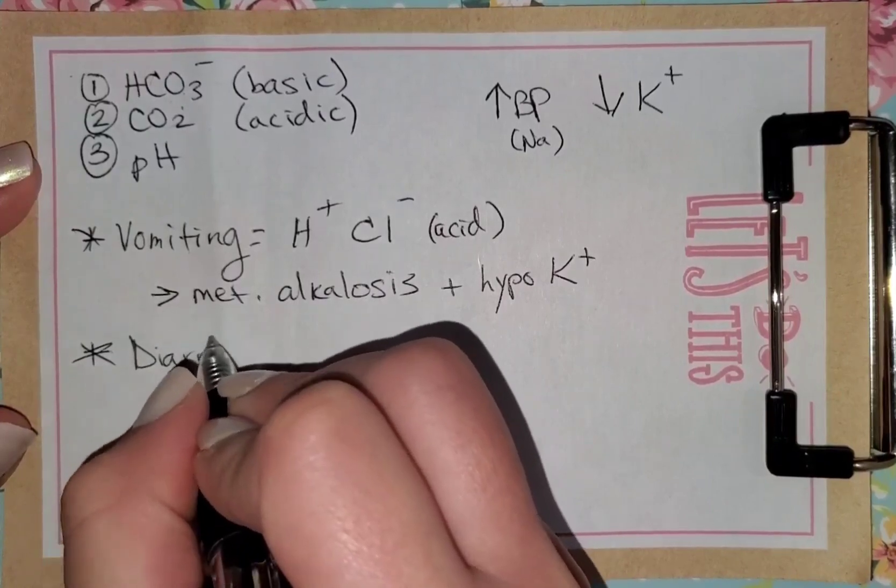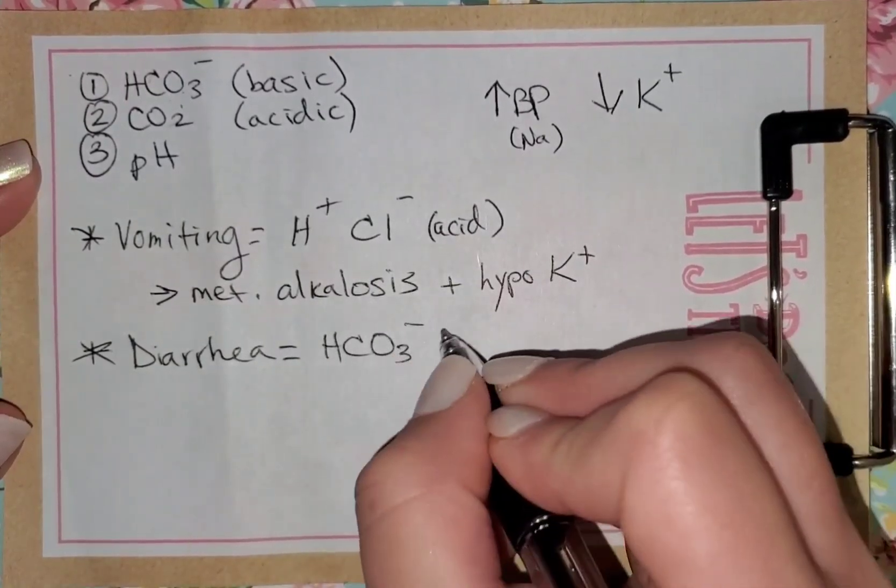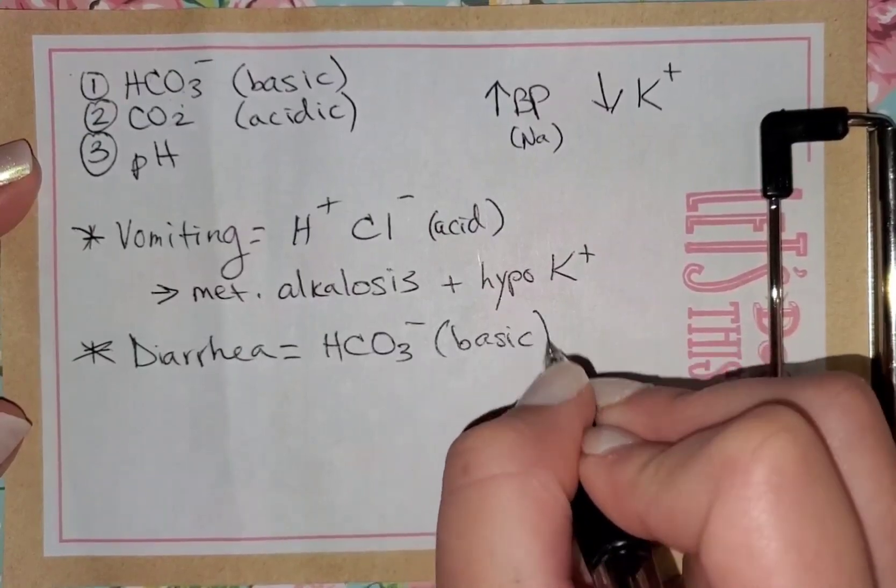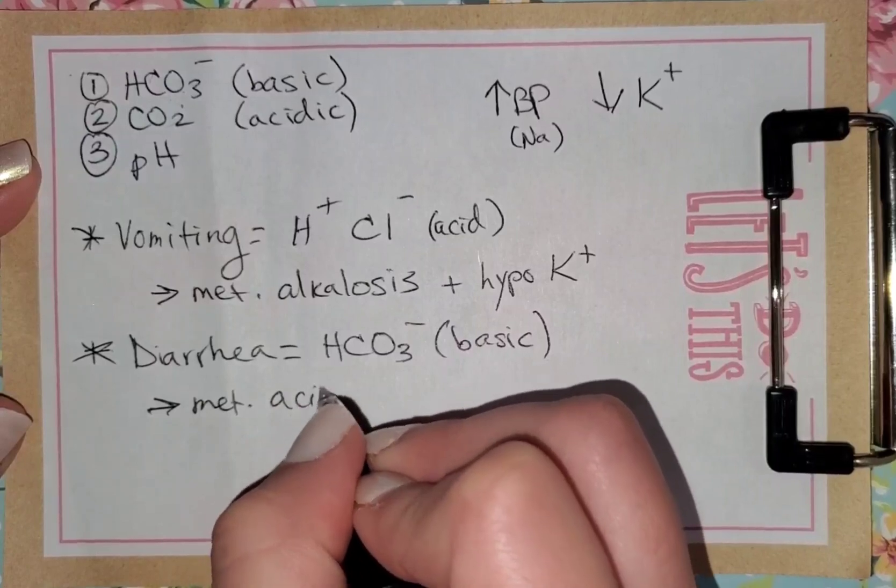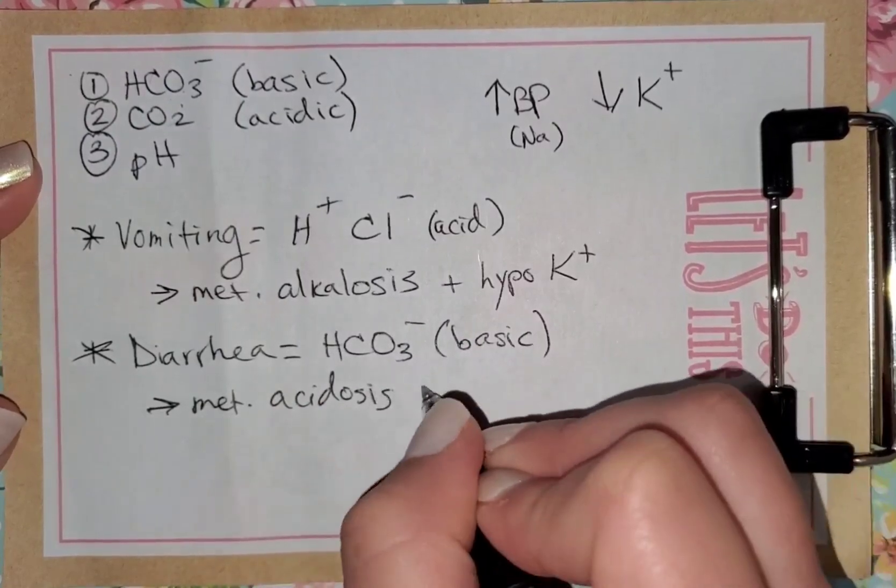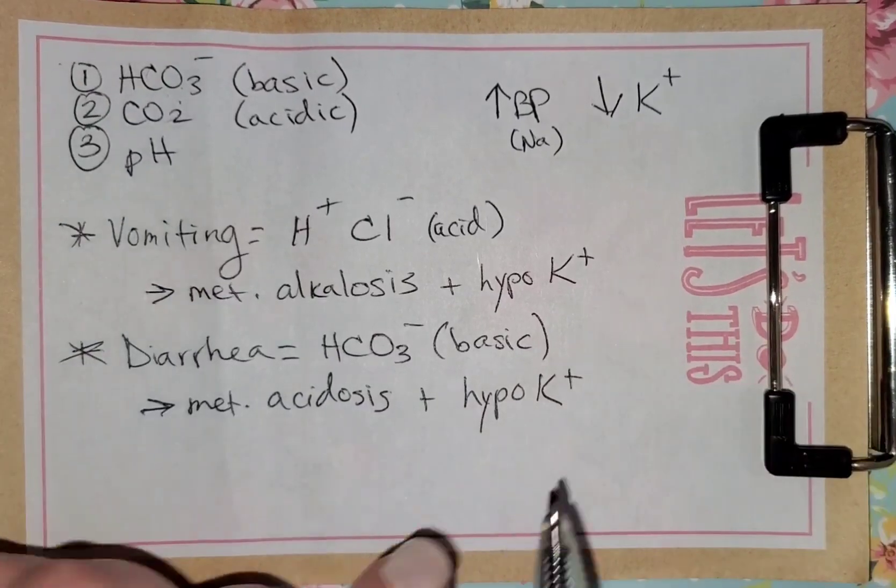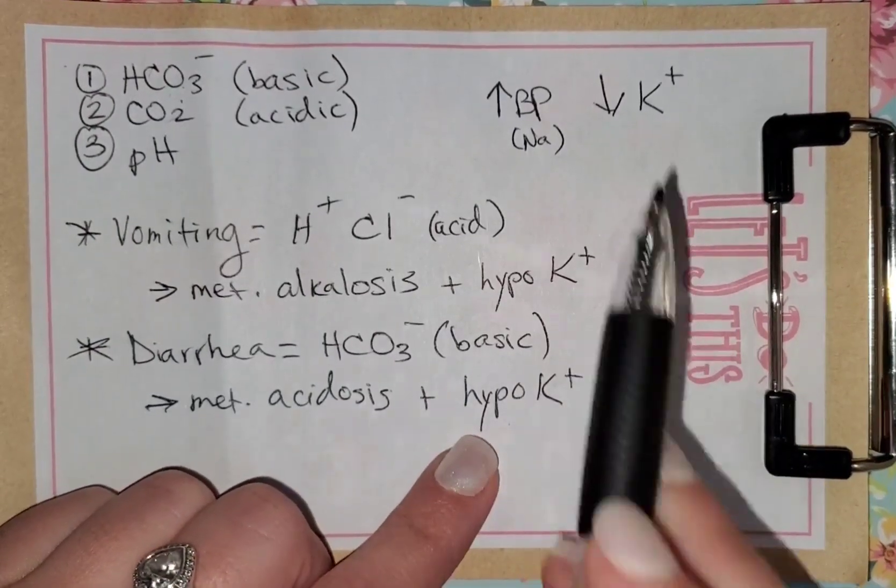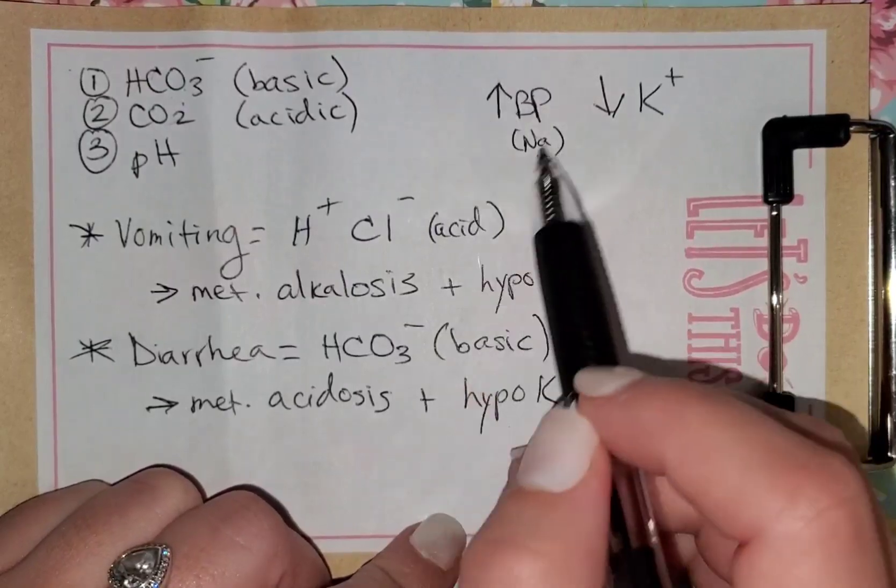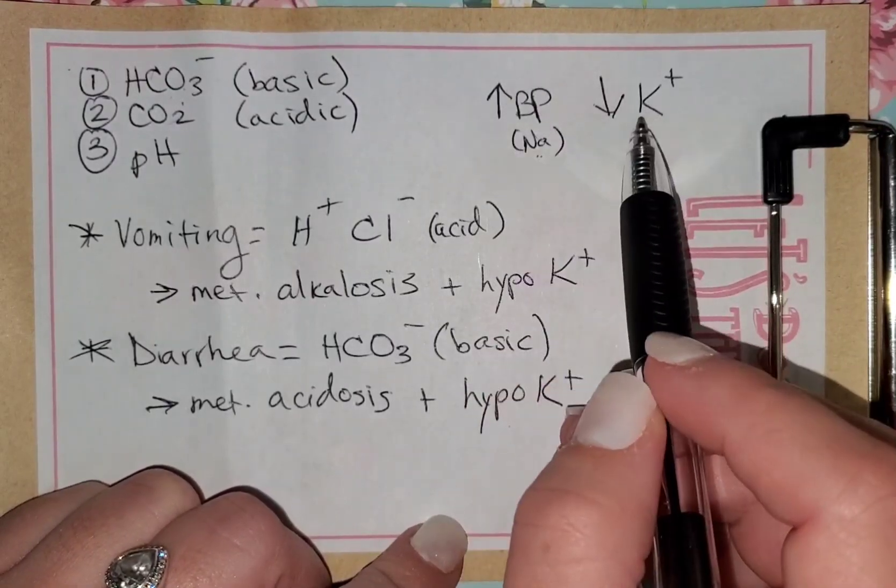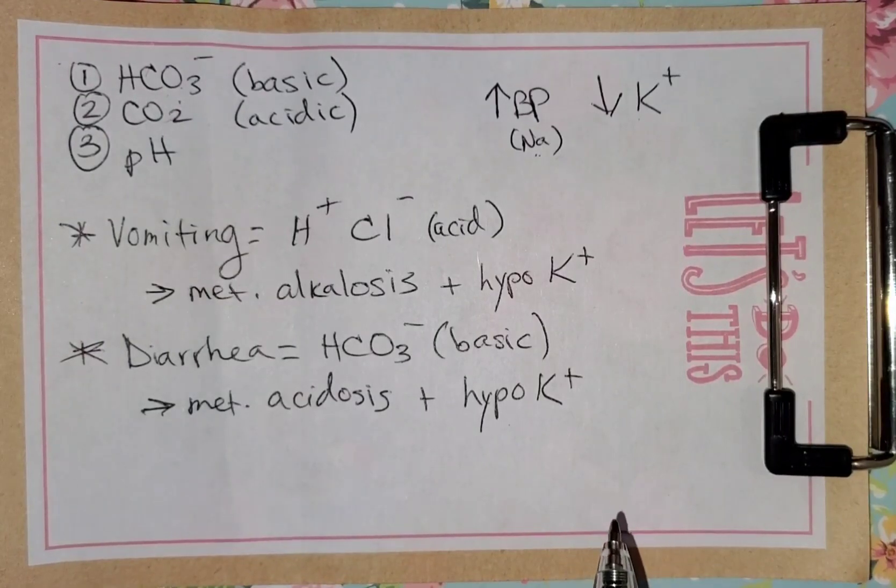Now, if you have somebody who has diarrhea, what are they losing? They're losing bicarbonate, which is basic. So the opposite is going to happen. They're going to have a metabolic acidosis plus they're going to be dehydrated. So you're going to have hypokalemia because when you're losing a lot of water, you're going to have more sodium in your blood. And if you have a high sodium, you have a high blood pressure, meaning you'll have low potassium. That's just the easiest way to look at it, in my opinion.